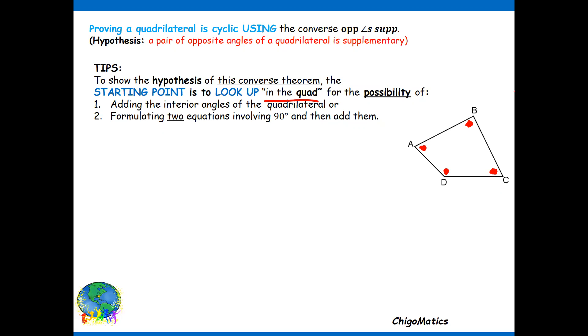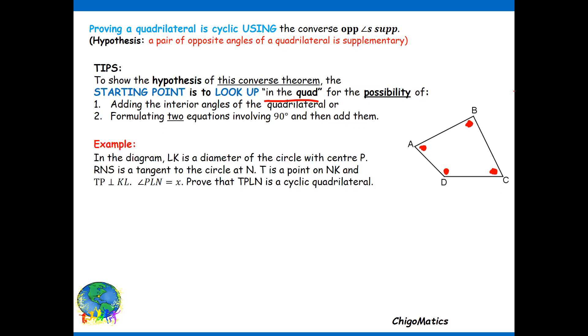An example: in the diagram, LK is a diameter of the circle and P is the center. RNS is a tangent to the circle at N. T is a point on NK and TP is perpendicular to KL. Angle PLN is equal to x. Prove that TPLN is a cyclic quad.